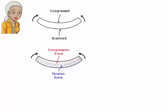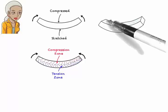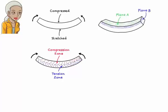The outer fibers are compressed more than the inner ones. For example, fibers on plane A are compressed more than fibers on plane B. Similarly, the bottom part of the beam undergoes tension and its fibers stretch. But the outer fibers are stretched more than the inner ones.